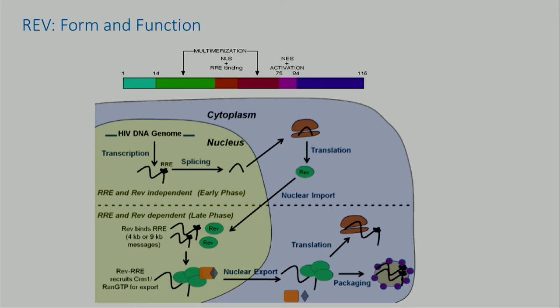The REV protein can recycle back into the nucleus and do this all over again. One consequence of REV dependence is that HIV infection is divided into two phases. Early after infection, when there's no REV or low REV, only completely spliced RNA gets out. But as REV builds up, you start exporting the RRE-containing mRNA and then virus production can happen. It has been proposed that insufficient REV function can also contribute to cellular latency. So with the current focus on the latent reservoir, this may reemphasize the role of REV and TAT in the maintenance of persistent viral reservoirs.